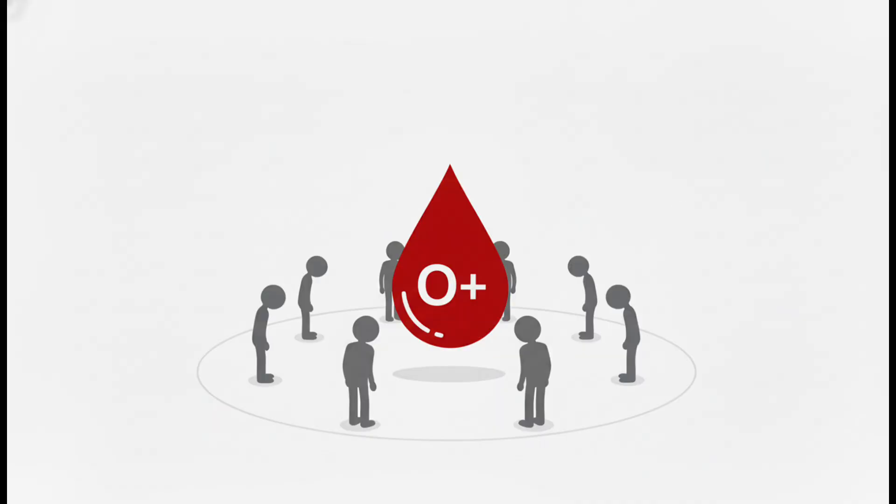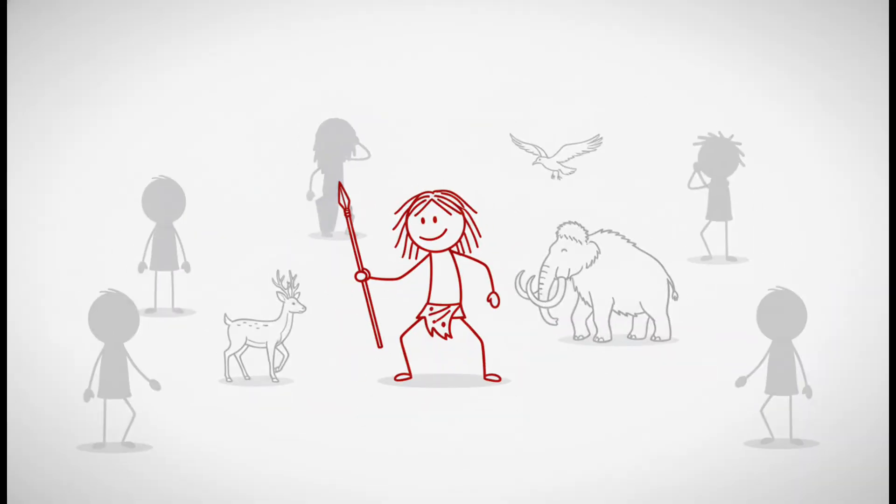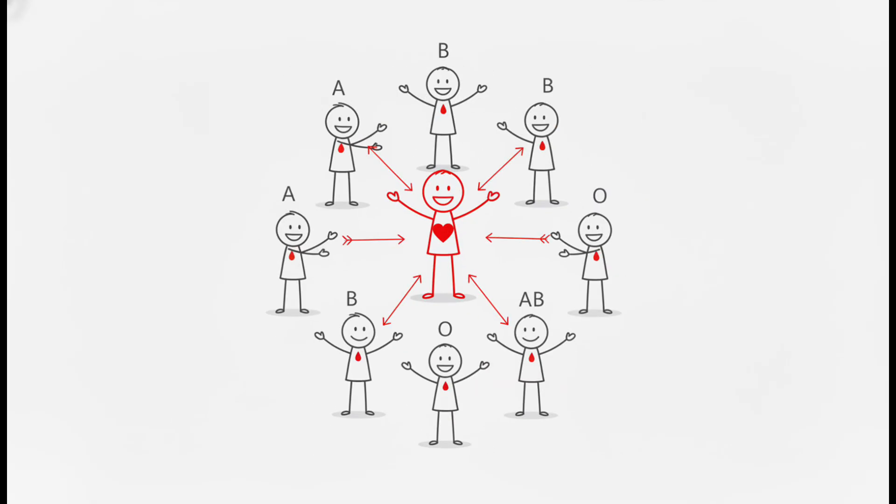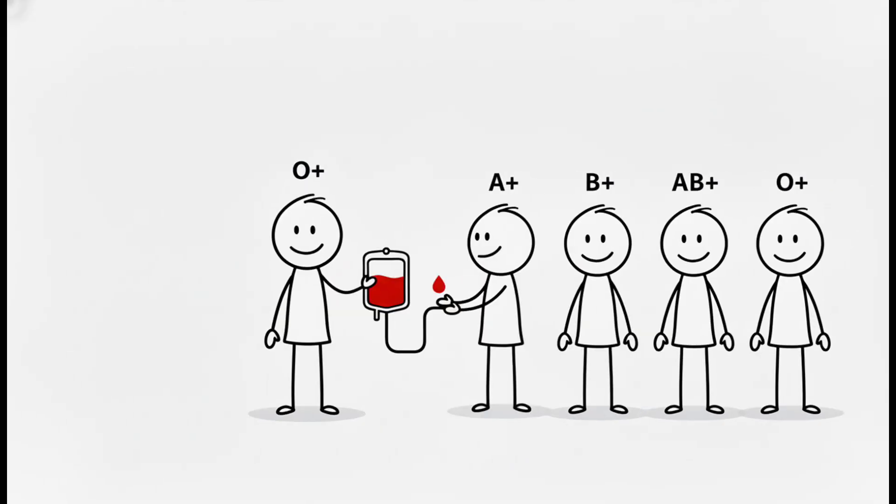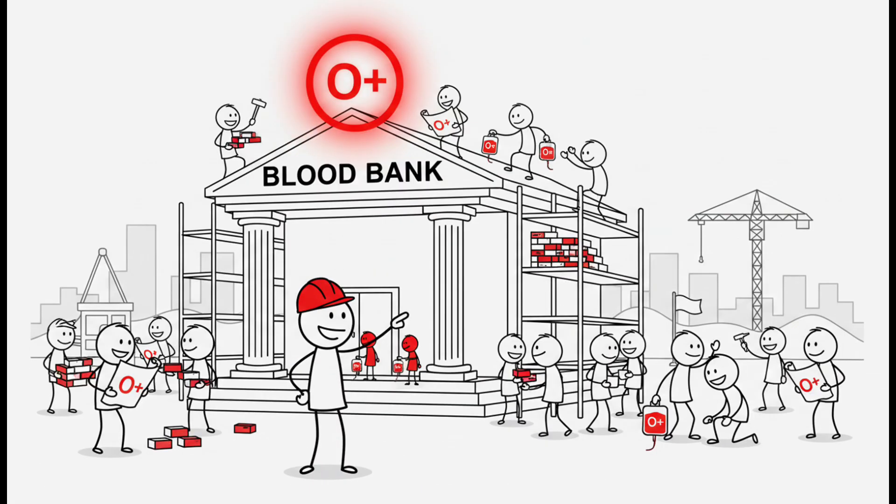This is humanity's original blood, the genetic code of our hunter-gatherer ancestors before borders, before farming, before civilization. Its power is in its reach. O positive can be transfused into anyone with a positive blood type: A, B, AB, or O. That's why blood banks are built around it.